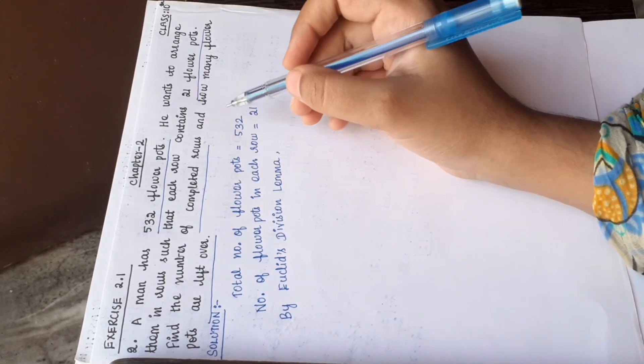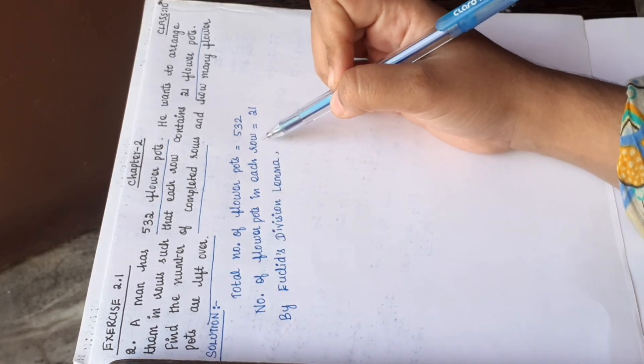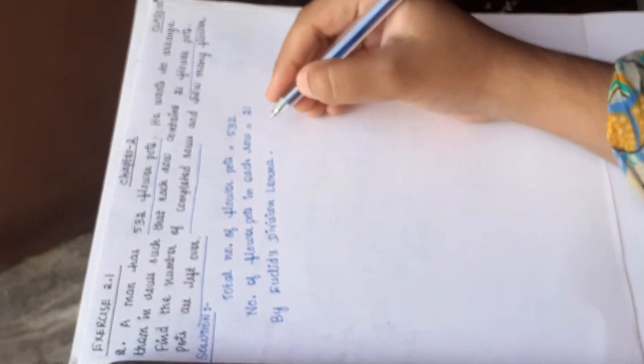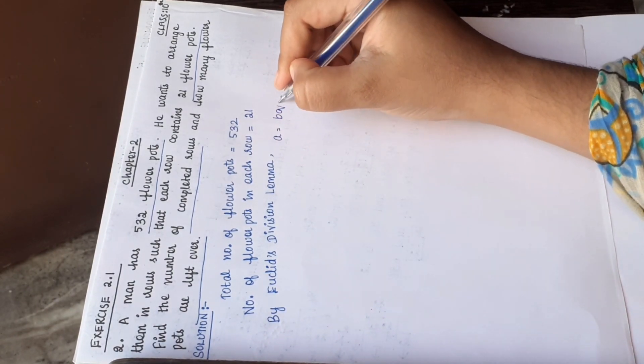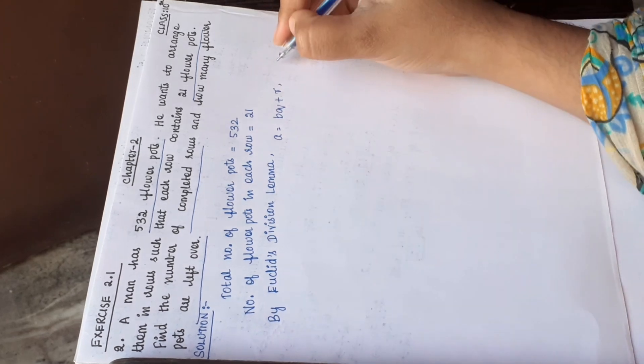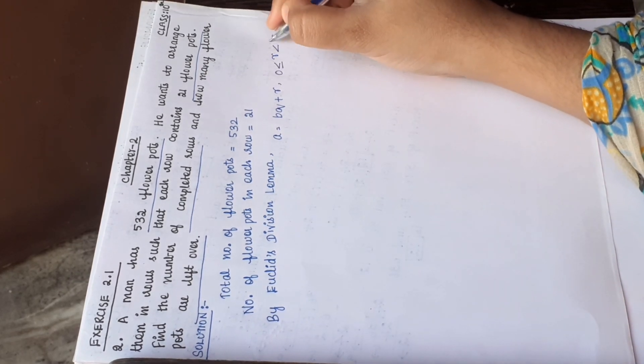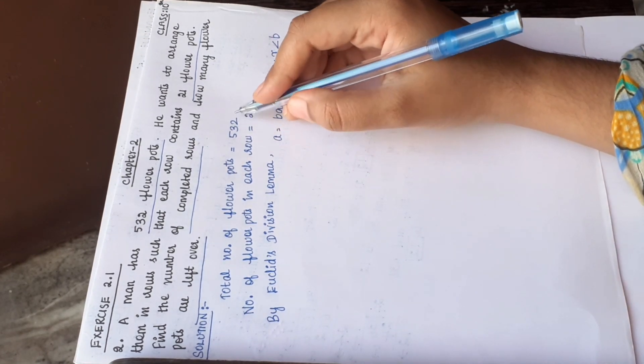Total number of flowerpots in each row is 21. So we know already by Euclid's division lemma, for example a is equal to bq plus r, where r lies between 0 and b.